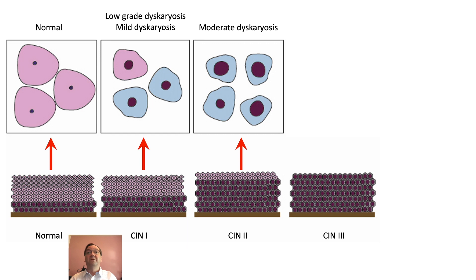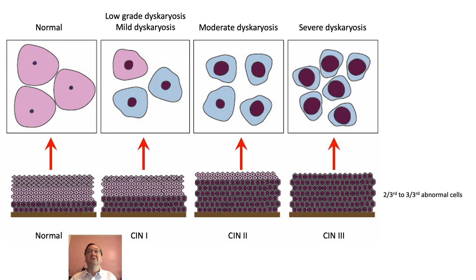CIN3 is when you have two-thirds to full thickness. And again, if you took the top layer of these cells, you could see they would look very different under a microscope on a smear.